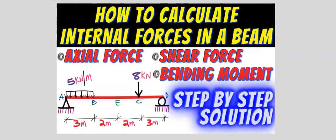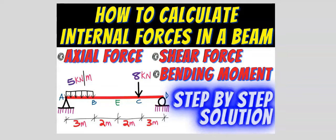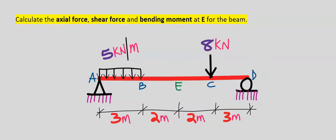Let's consider how to calculate the internal forces in a beam, which has to do with cutting a beam at a point to analyze the axial force, shear force, and bending moment at a given point. In this question, we are going to calculate the axial force, usually represented with the letter H, the shear force, usually represented with the letter V, and the bending moment, usually represented with the letter M, at point E.